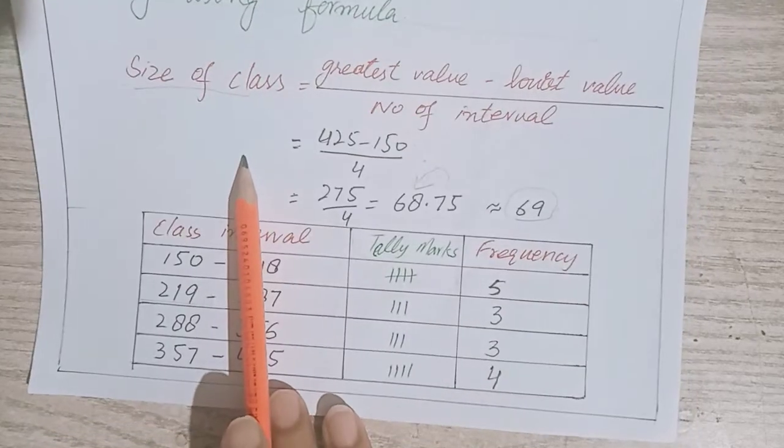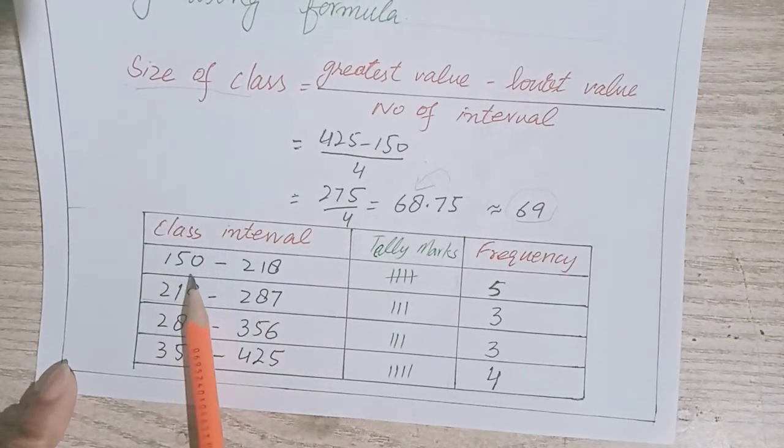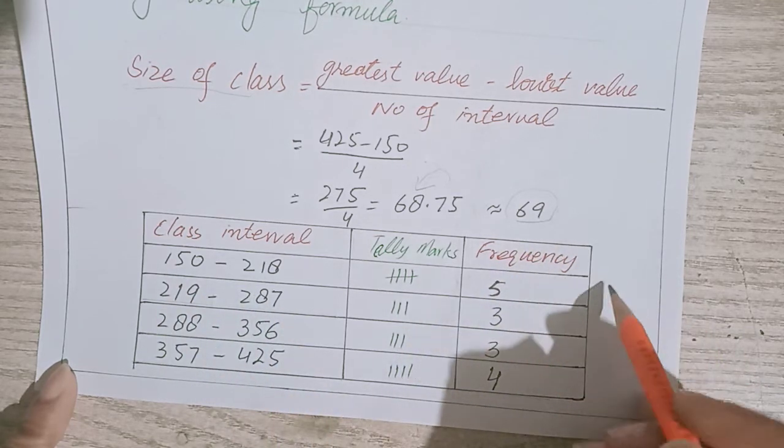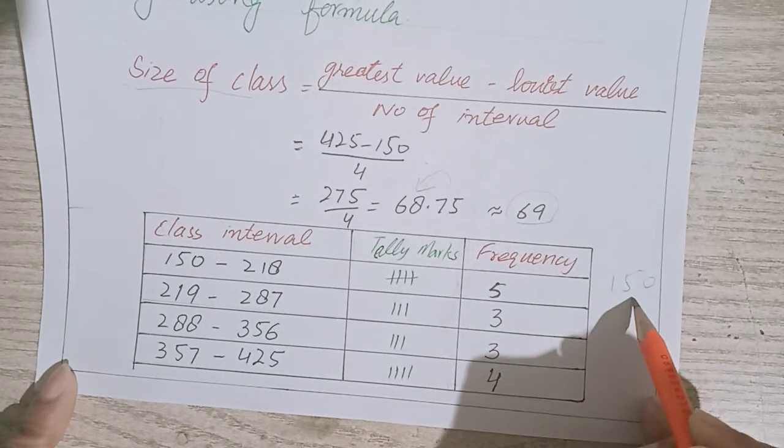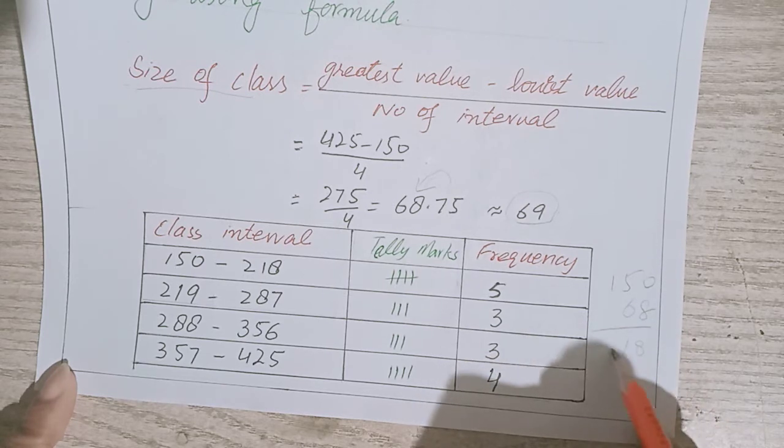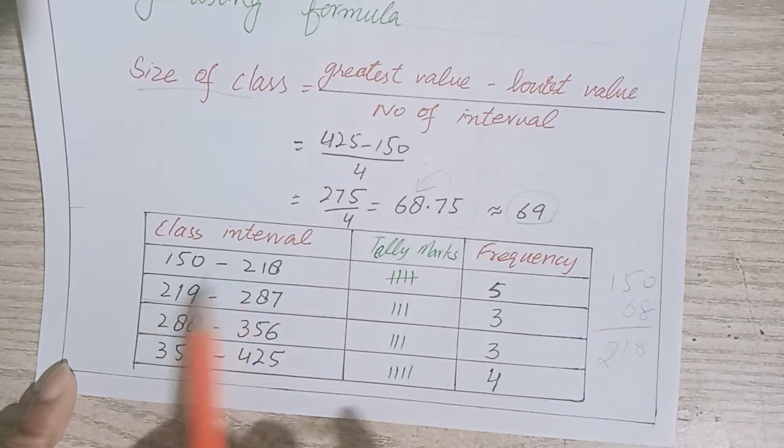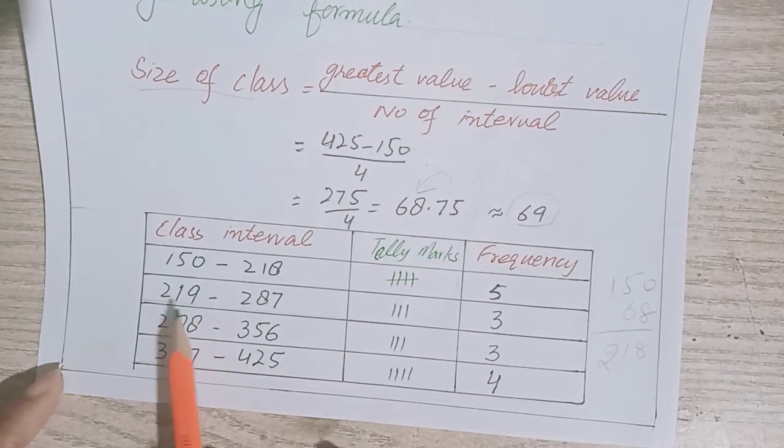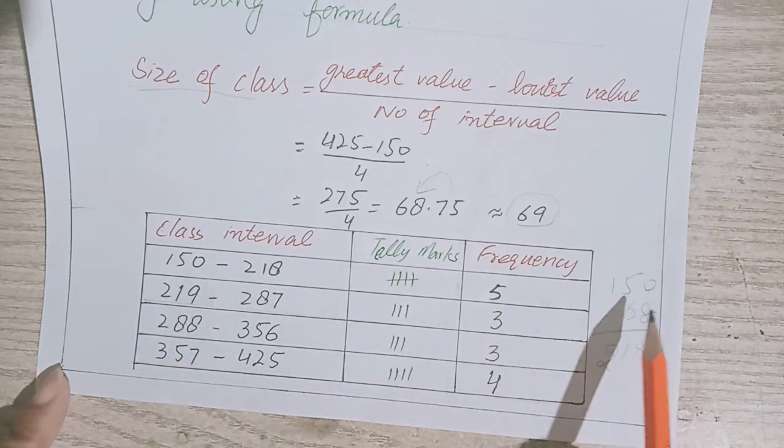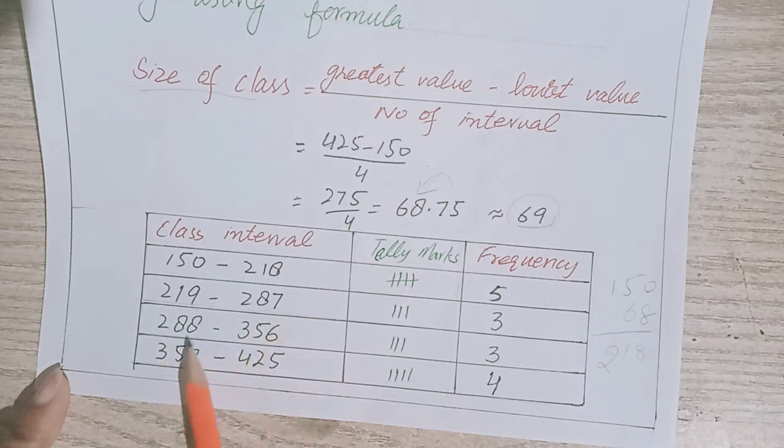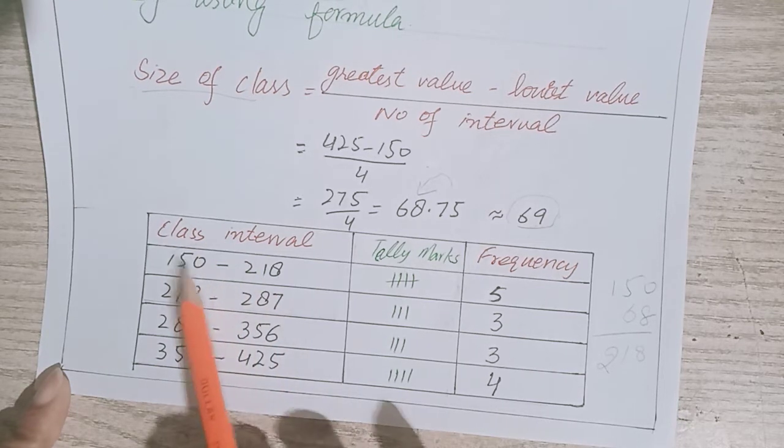We will start the classes. First class starts from 150, the lowest value. 150 plus 68 gives 218, so with one increase that's 219. Next: 219 plus 68 equals 287, then 288 to 356, and 357 to 425. We have all these values one by one.